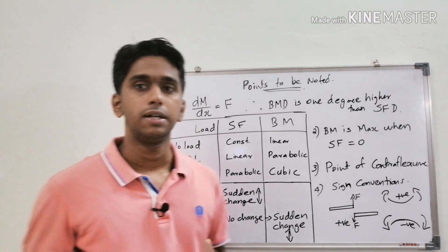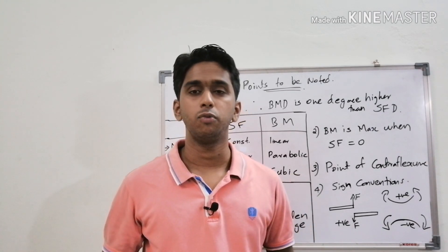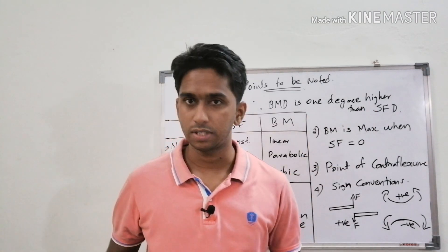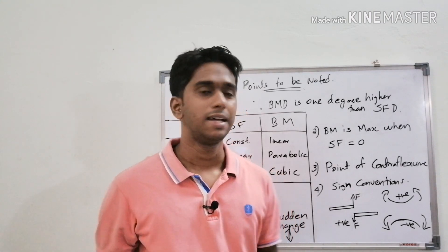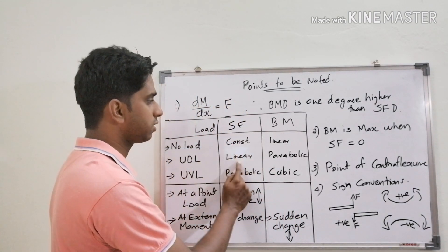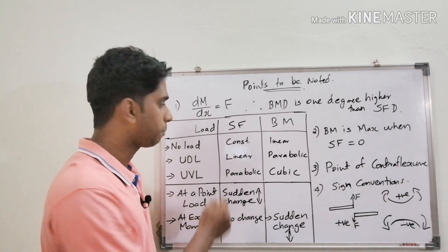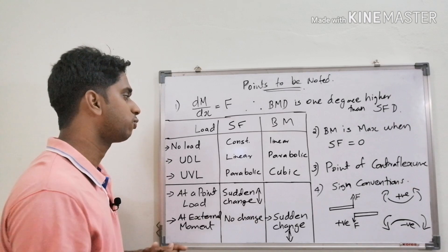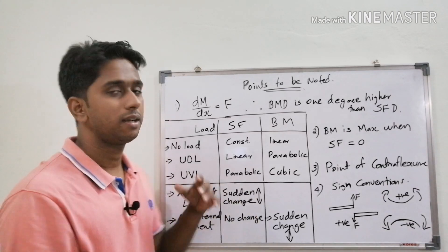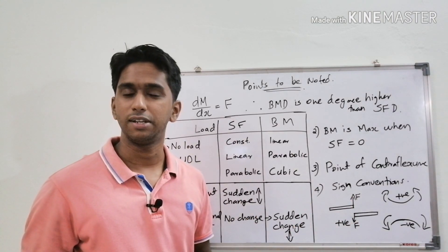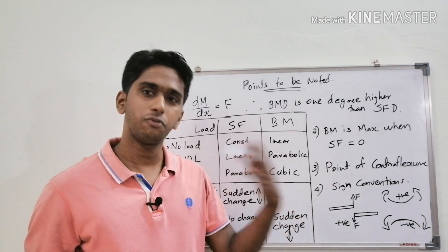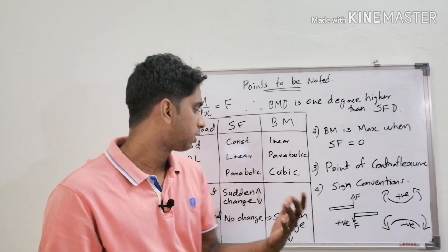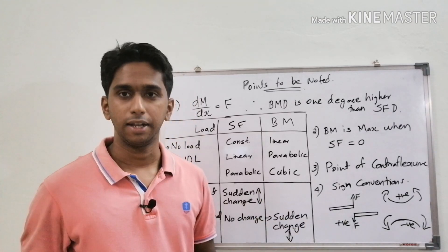The bending moment diagram will always be one degree higher than the shear force diagram. That means if we have a linear variation in shear force diagram — as in the case of UDL — the bending moment variation will be parabolic. And if we have a parabolic variation in shear force diagram, we will have a cubic variation in bending moment diagram.